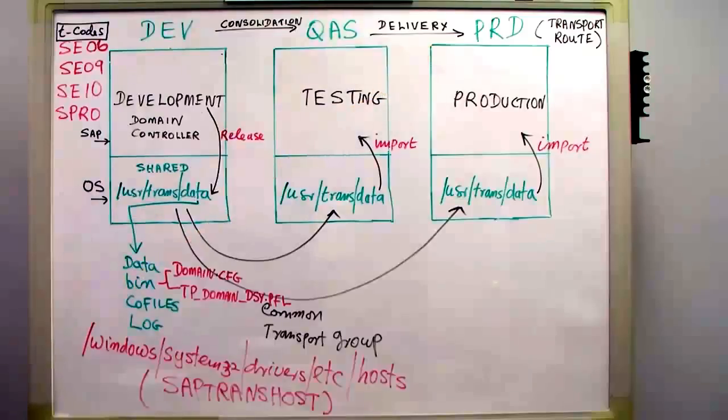In this scenario, we're using a common transport group, so all these systems belong to one transport group. The shared directory is in the development system, which also happens to be our domain controller in this example.